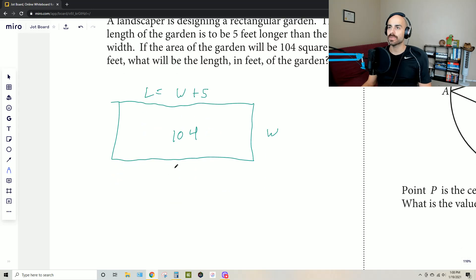Remember that area is found by multiplying length times width. So we can now just write this as length times width equals 104. But this doesn't help us because we have two variables and we only want one if we're going to solve for it. So we can now replace L though, with what we know it equals, which is w plus five.